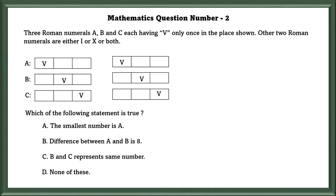Mathematics Question Number 2: 3 Roman numerals A, B, and C, each having V only once in the place shown. Other 2 Roman numerals are either I or X or both. First, let's see the A option. VXX cannot be possible. In Roman numerals, if a symbol is placed before a greater value or symbol, we have to subtract the smaller value from the greater value. Here, X is 10 and V is 5. We cannot subtract 10 minus 5 because there is already a symbol for 5, so this is wrong.